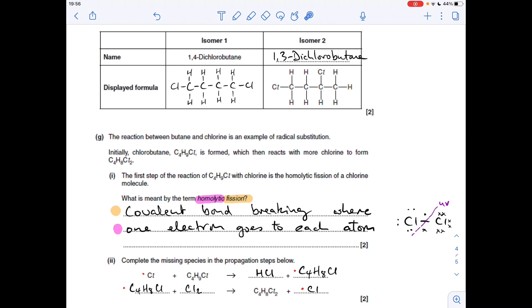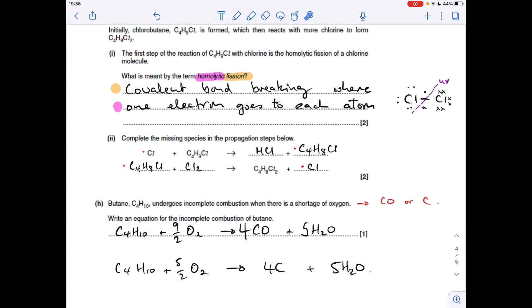You get the dihaloalkane and a chlorine radical. The final question: write an equation for the incomplete combustion of butane. Incomplete combustion forms either CO or C. You can actually make both of those, but it kind of makes the equation a bit more complicated to write, so we'll just keep it simple. There's no point complicating it if we don't need to. You can see I've written the carbon monoxide version and I've written the carbon version.